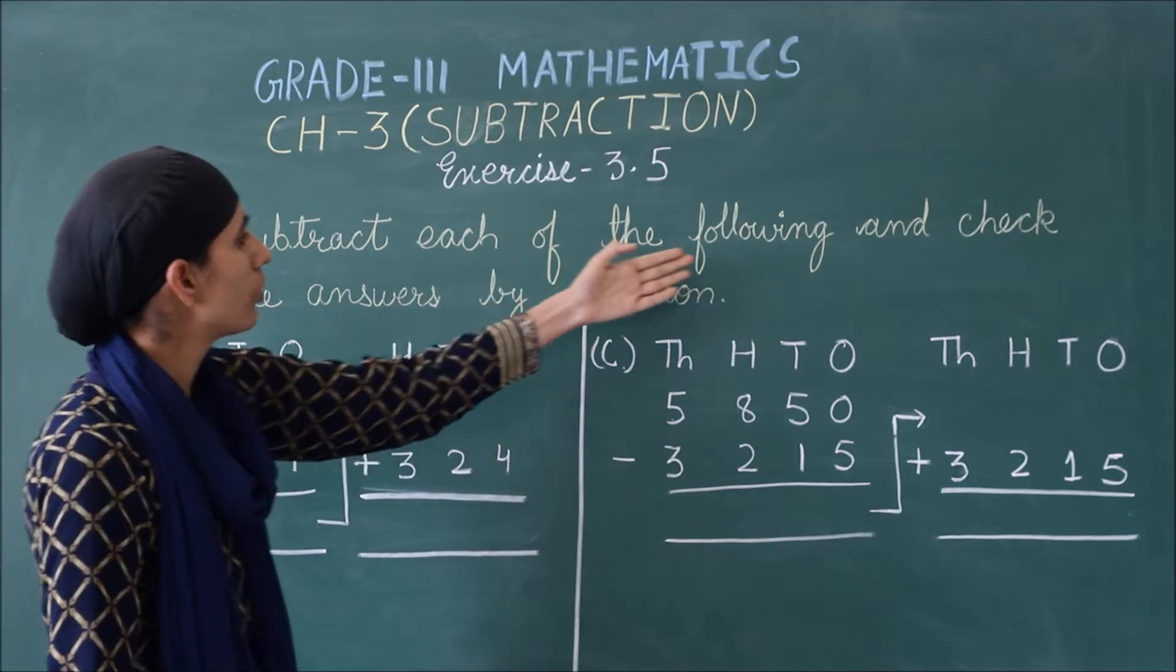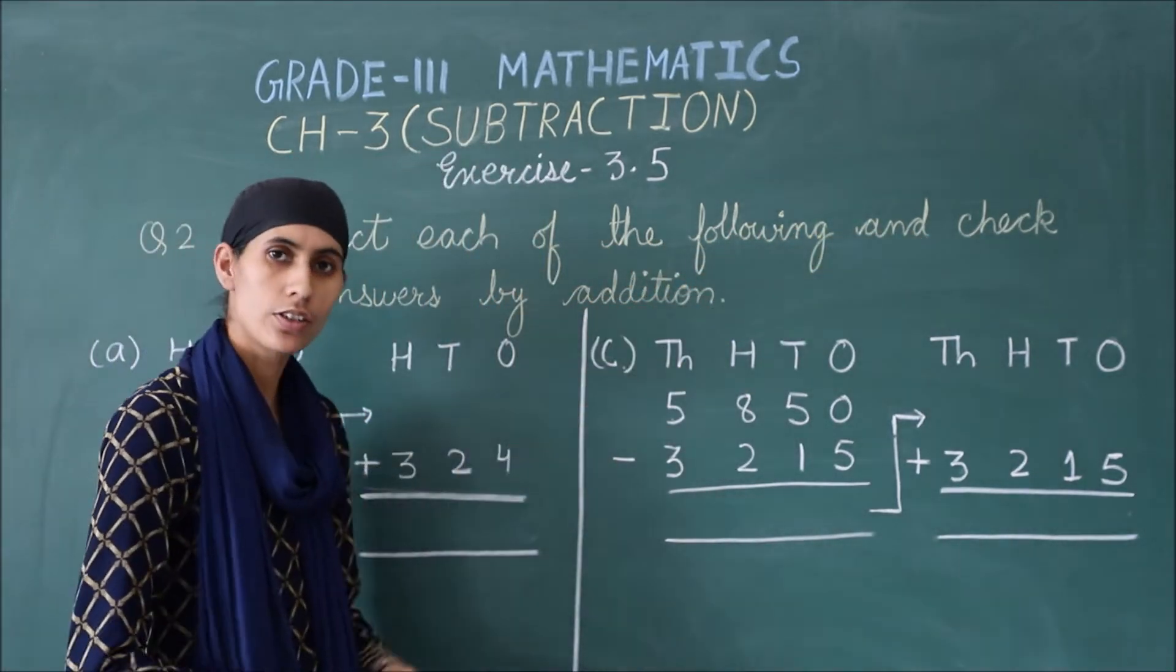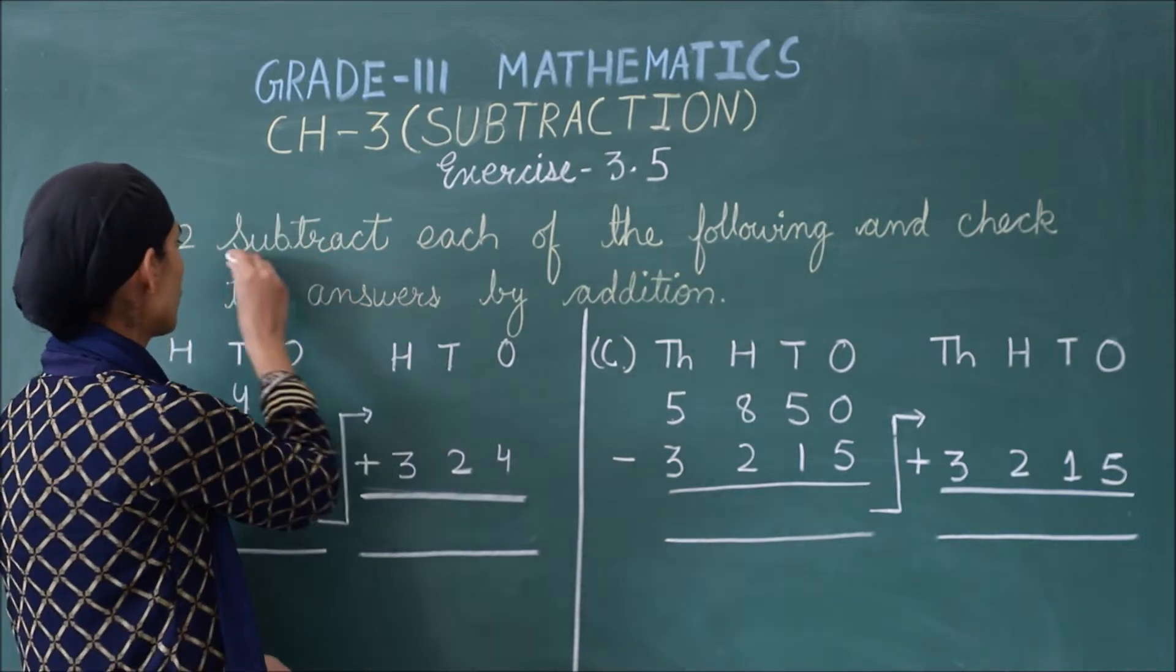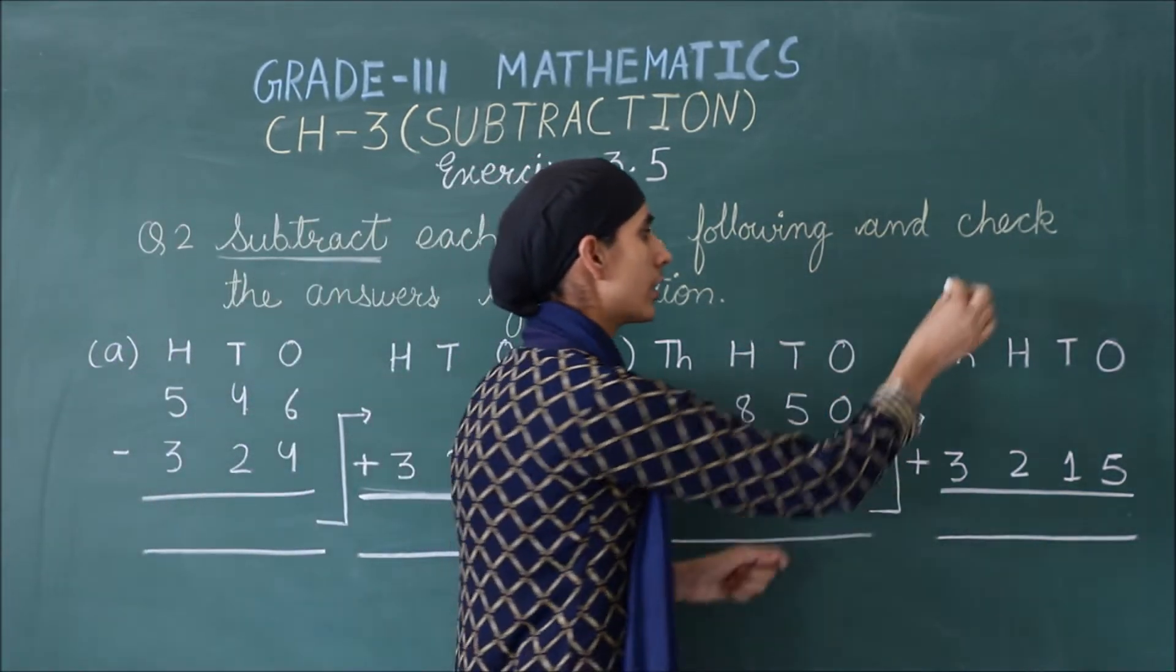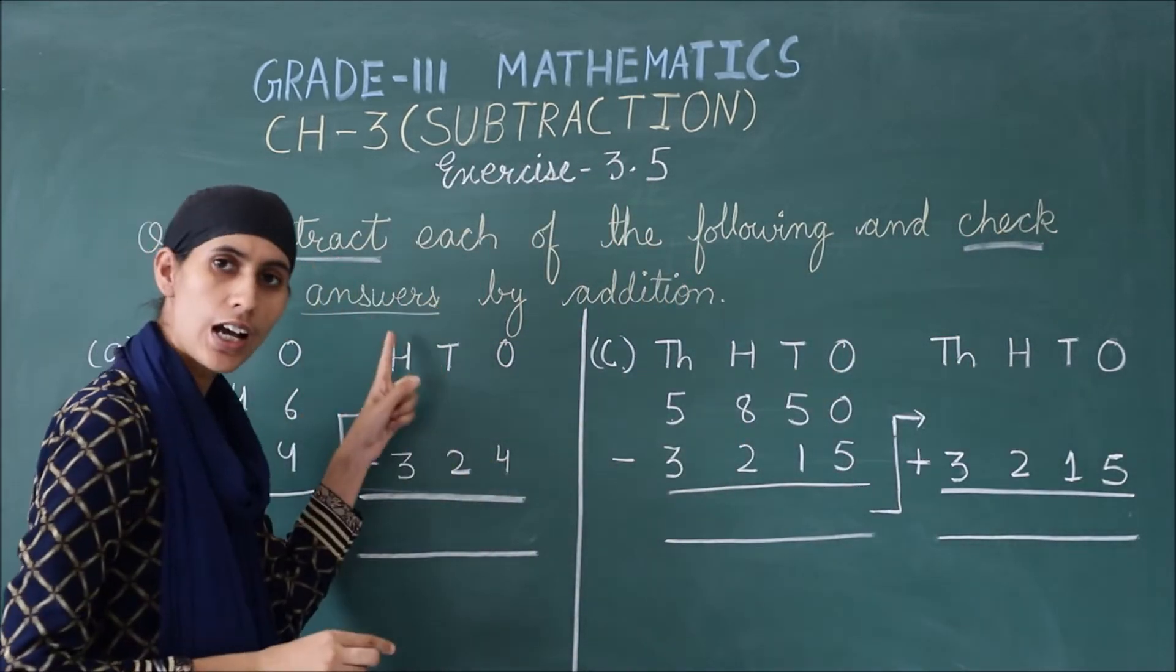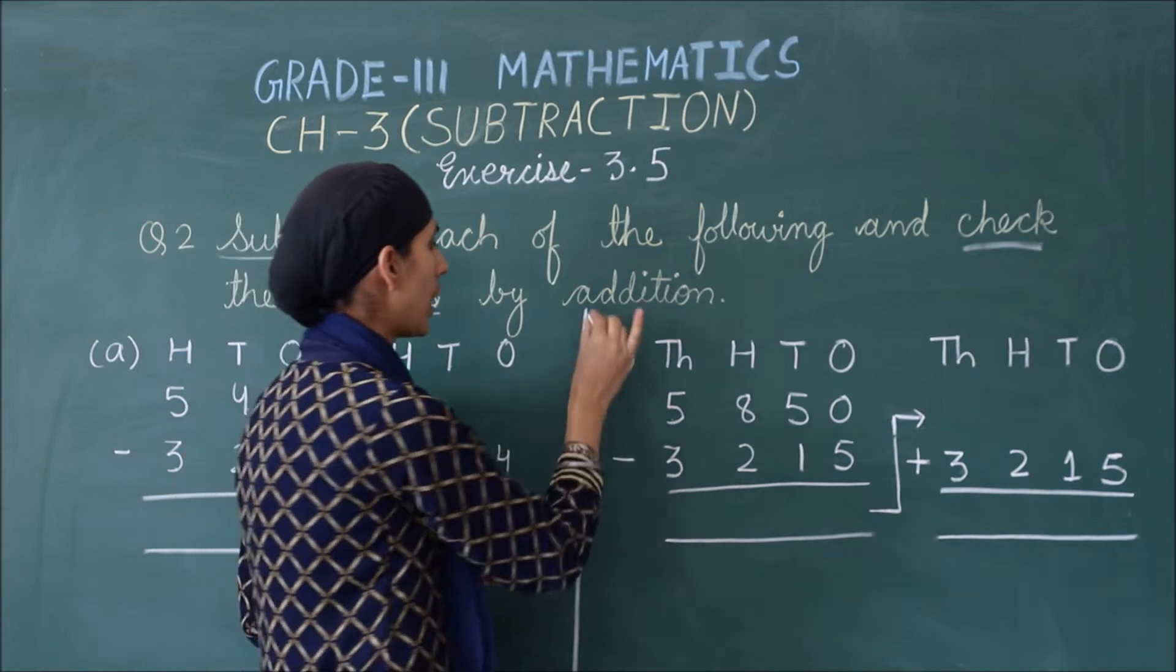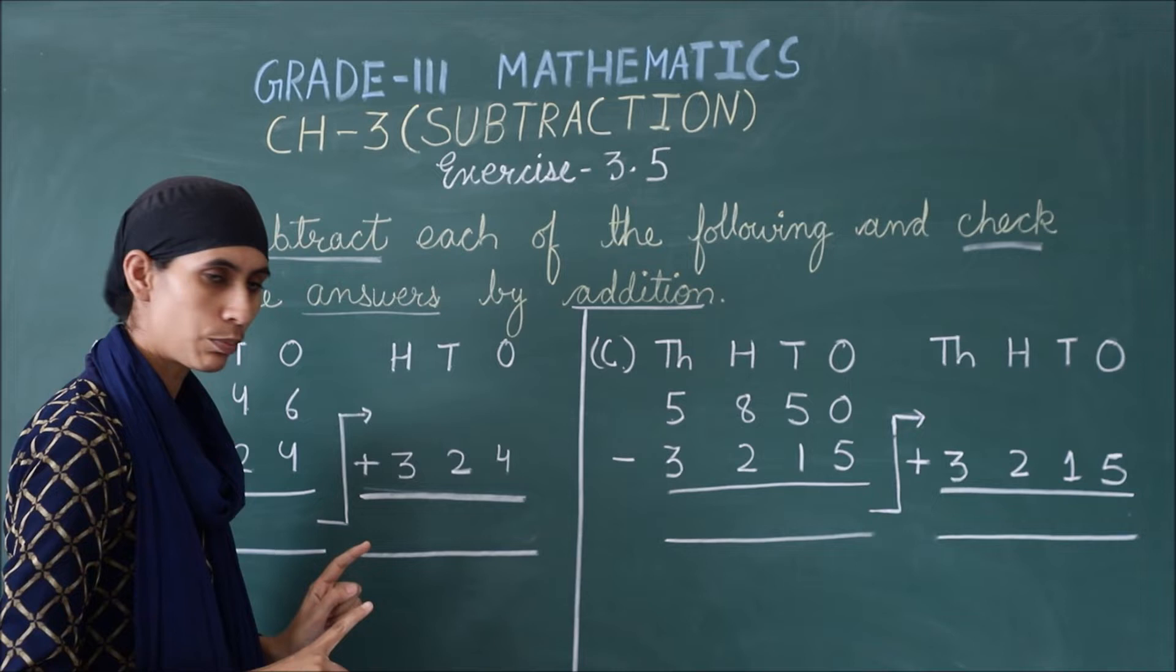Subtract each of the following and check the answer by addition. So, what is our question? We have to subtract first and then check our answer. And how does the subtraction answer check? By addition. Okay? So, first step which we follow is subtract.